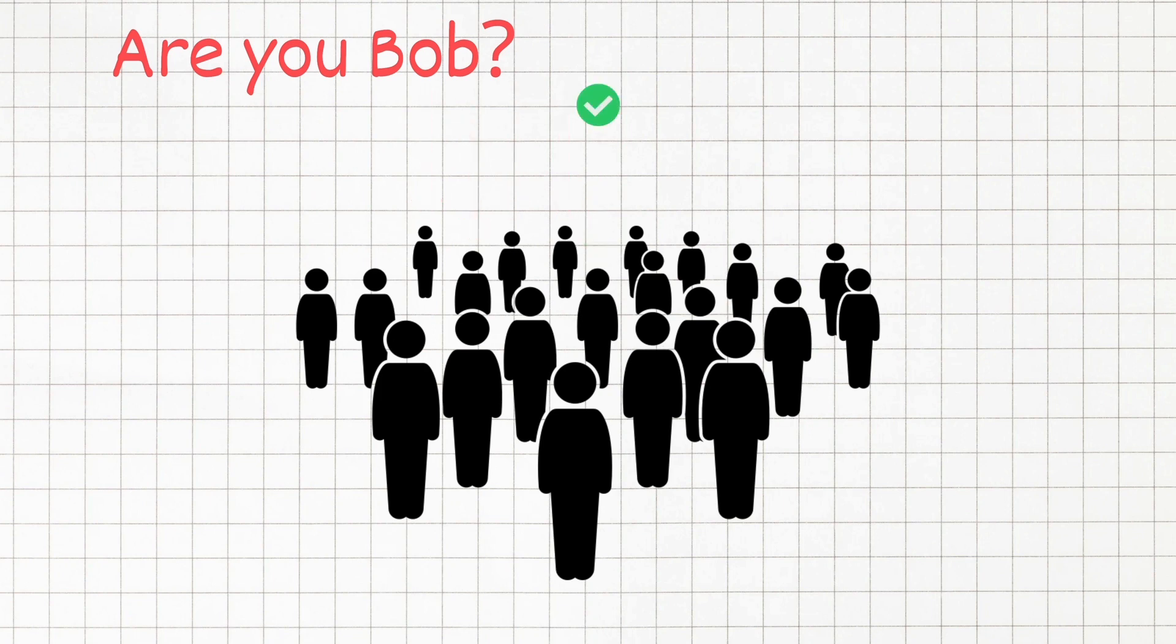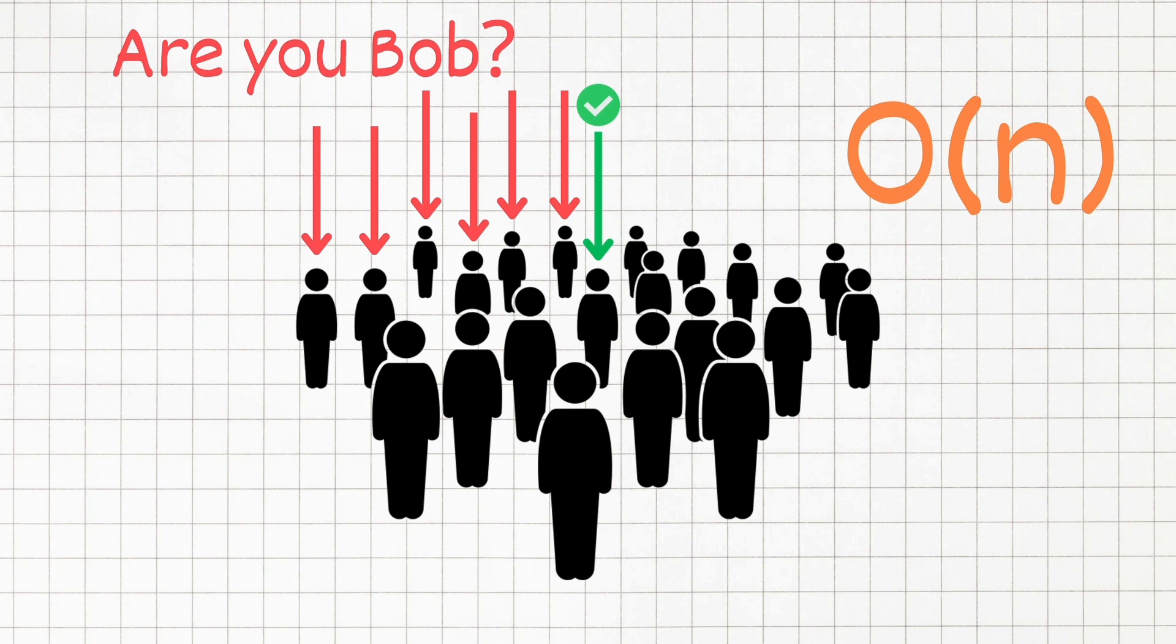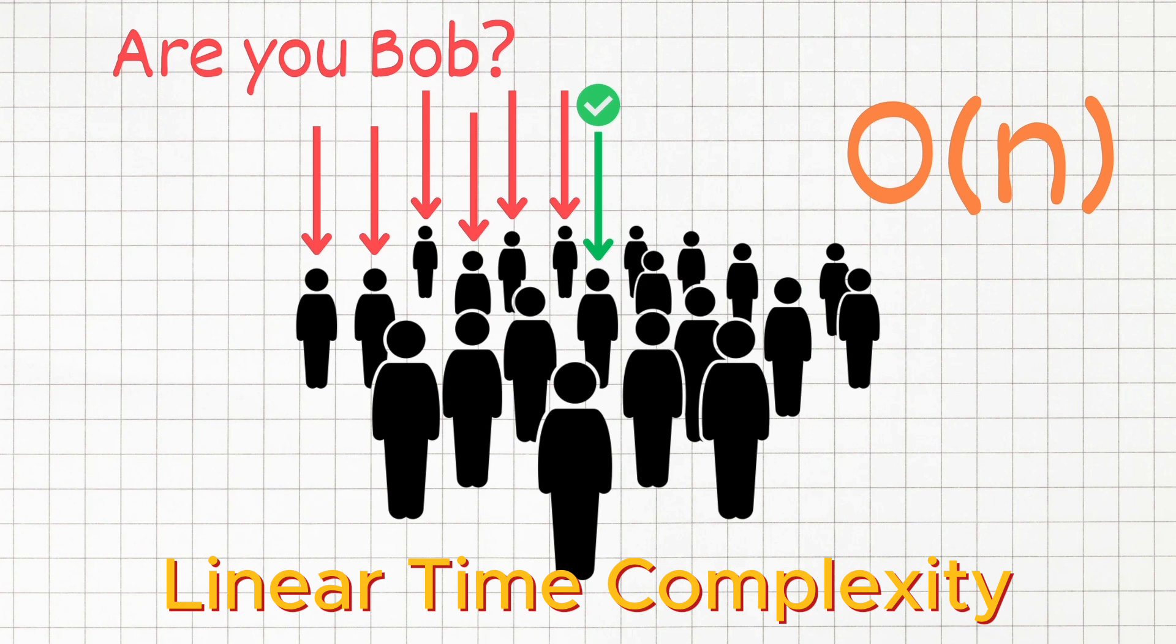This in Big O terms would be O of N, where N is the number of people in the crowd. Because if Bob was the last person in the order, you would have to go through all of the people to find Bob. And the more people there are, the more time it takes to find Bob. This is known as linear time complexity.